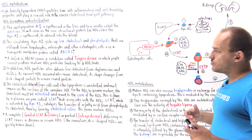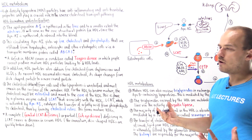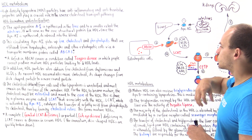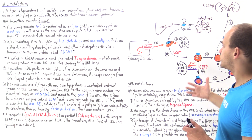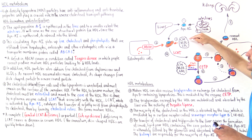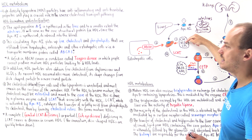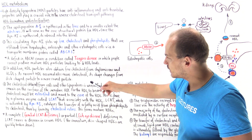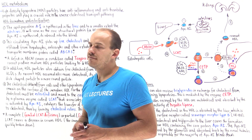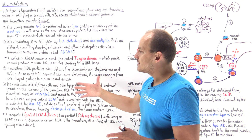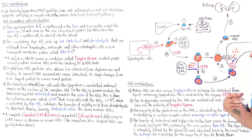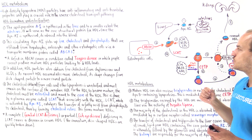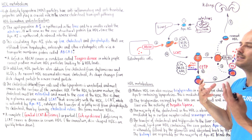Supposing we don't have Tangier's disease and ABCA1 is fully functional, as we're receiving free cholesterol particles from cells, we also receive free cholesterol and phospholipids from circulating lipoproteins such as chylomicrons and VLDL. As the nascent HDL accumulates more and more of these free cholesterol particles and phospholipids, it changes its disc-like shape to a more spherical shape, but it's not yet mature.